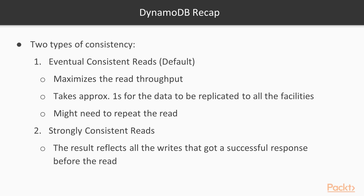There are two different types of consistency supported with DynamoDB. The default consistency type is eventual consistent reads, which maximizes the read throughput, but it will take approximately one second for the data to be replicated to all the facilities, so you might need to repeat the read to get the newest data. Strongly consistent reads reflect all the writes that received a successful response before the read was made. Use eventual consistent reads if you want to maximize read throughput; otherwise, strongly consistent reads depend on how sensitive your application is.